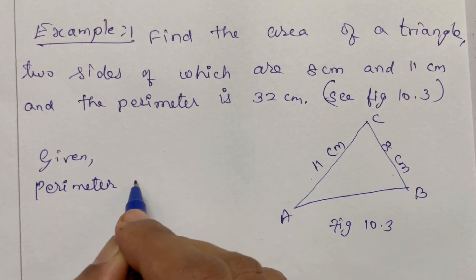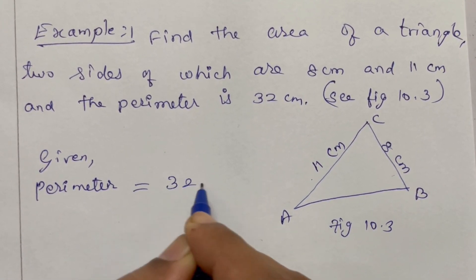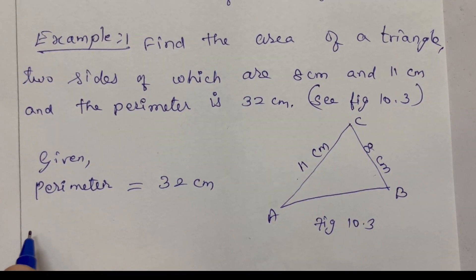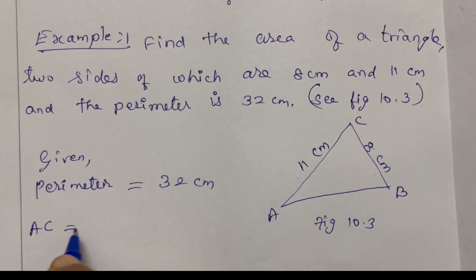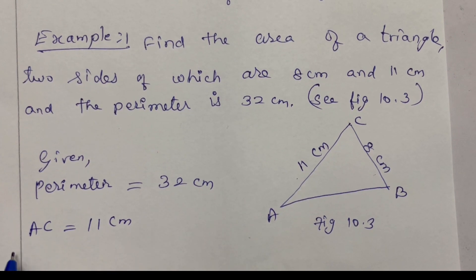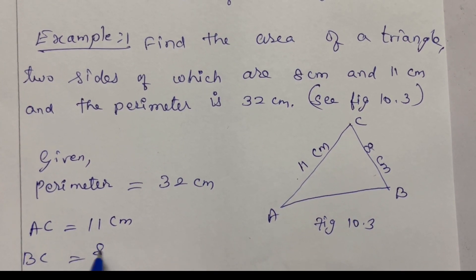Given: perimeter equal to 32 cm, two sides AC equal to 11 cm, BC equal to 8 cm.